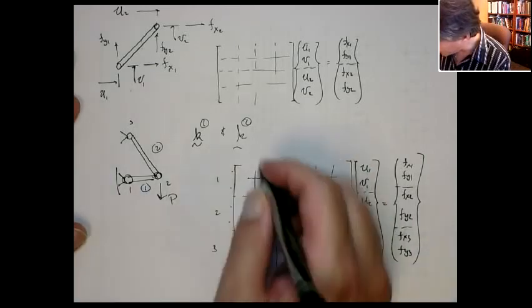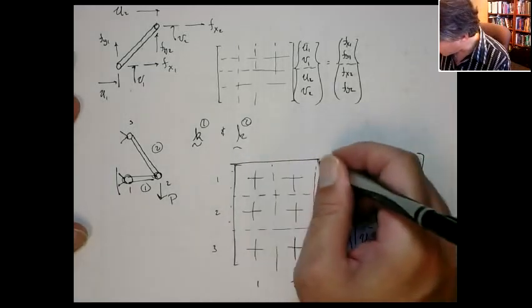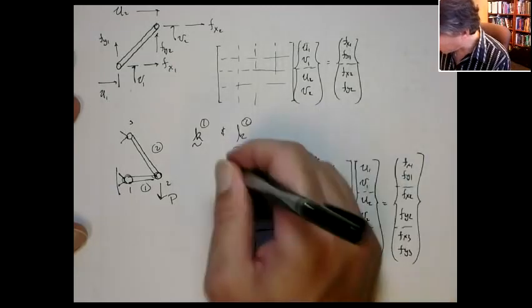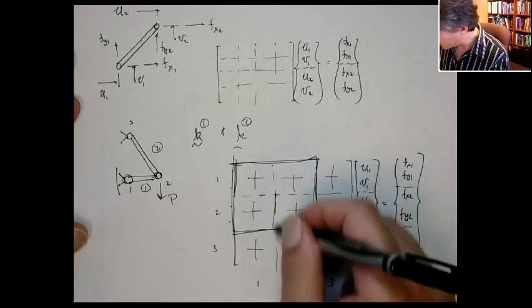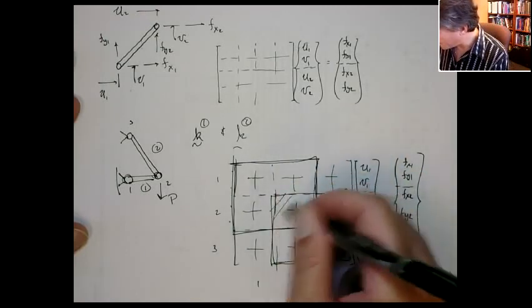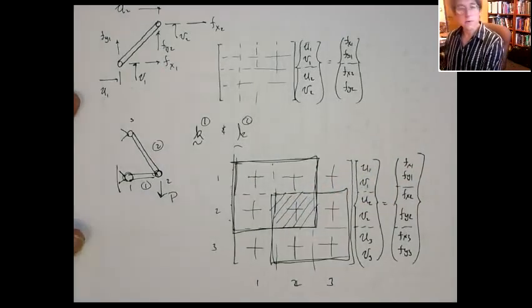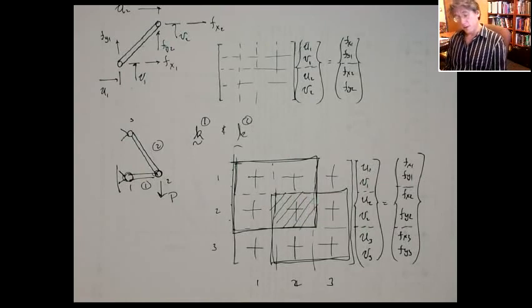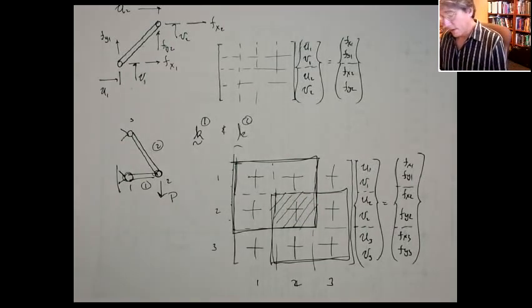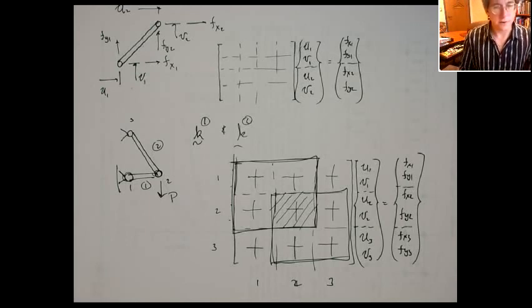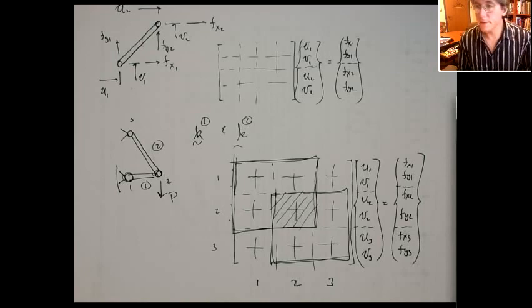So the first stiffness matrix would sit right here. Okay? And the second stiffness matrix would sit right here. And again, you'd get overlap right here at the x and y degrees of freedom of node 2. Okay? So if you have multiple degrees of freedom of node, it actually goes the same way. And that's the way it would go. Okay? I'll do another one of these later on, too, I think. If need be. Okay, let's stop.